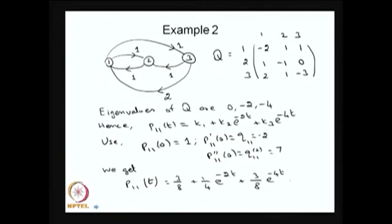I am going to give one more example. This has three states and this is a state transition diagram, and the values are nothing but the rates in which the system is moving from one state to other states. That is the difference between the state transition diagram of DTMC and the CTMC. This is the rate in which the system is moving from one state to another state, and some arcs are not there — meaning there is no way the system is moving from state 2 to 3 in a small interval of time, whereas all other possibilities are given.